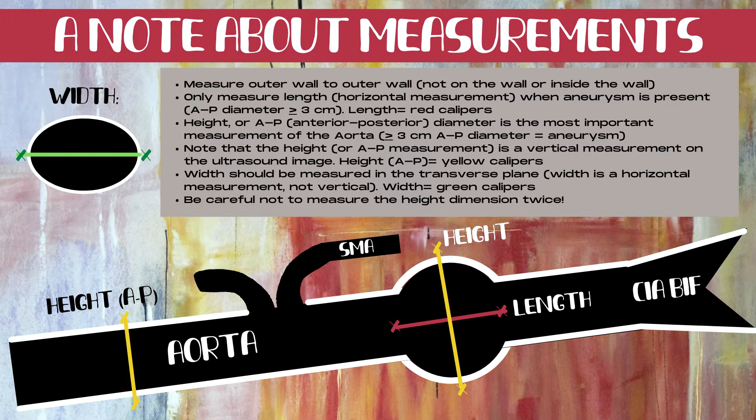The height, or AP — the anterior-posterior diameter — is the most important measurement of the aorta. Greater than or equal to three centimeters AP diameter is considered an aneurysm. Note that the height or AP measurement is a vertical measurement on the ultrasound image, and the height or AP dimension is represented by the yellow calipers on this image.